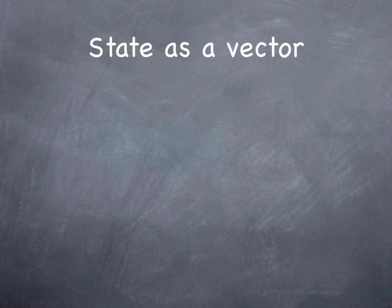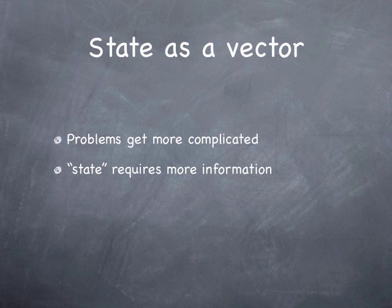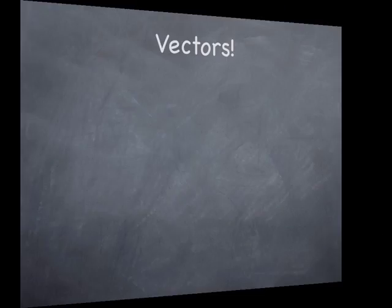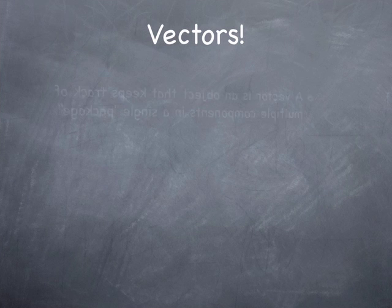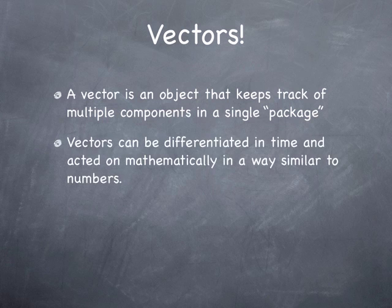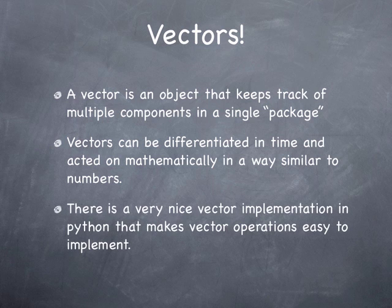Now, the next thing is, what if we've got a more complicated problem? What if the state requires more information than just a single number? And what if dsdt is a much more involved thing? How do we handle that complexity? The answer is, we use the concept of a vector. A vector is an object that keeps multiple components together as a single package. They can be differentiated and multiplied and divided and added, just like numbers. And not only that, there's a very nice array package that comes with Python that makes implementing operations with vectors very easy.